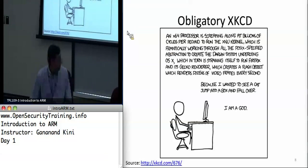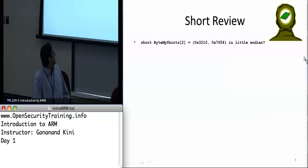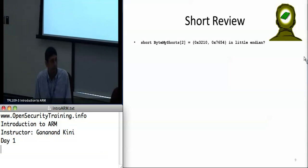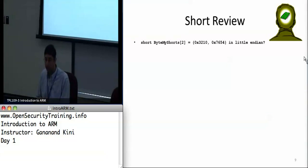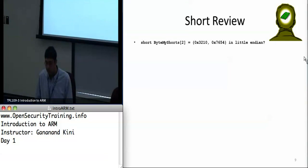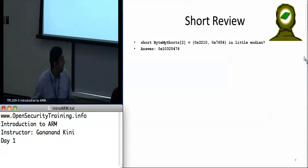I wanted to do a short review of Intel x86 to get us in the mindset. Endianness is only related to how data is stored in or retrieved from memory. Given hex values 0x3210 and 0x7654, you have to reverse the byte order for each of the full words. What you get is hex 0x10325476.